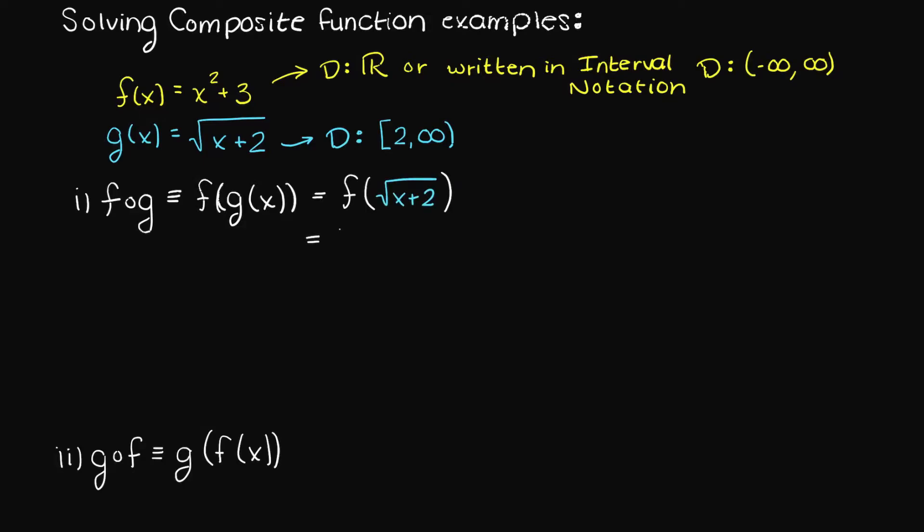Therefore, we get the square root of x plus 2, plus 3, squared. The square root and the exponent cancel one another, and we are left with x plus 5.